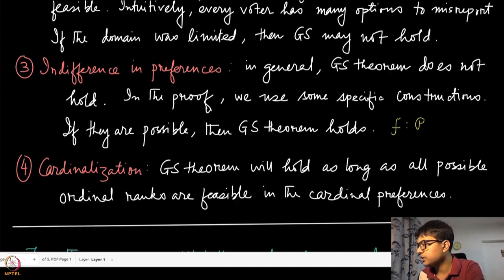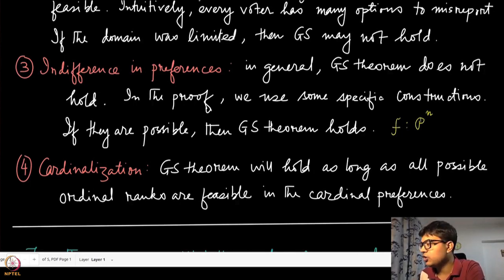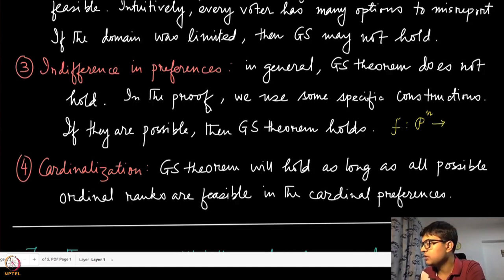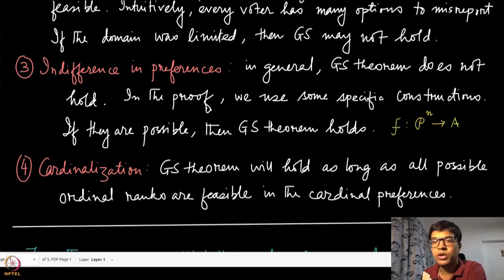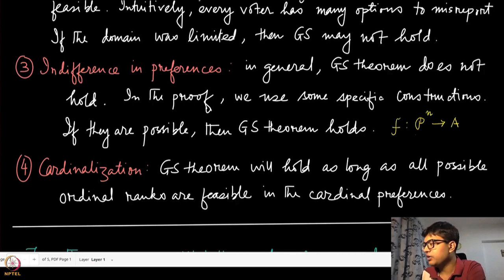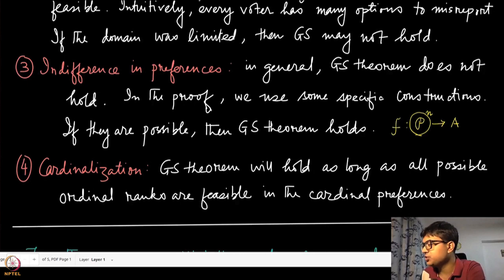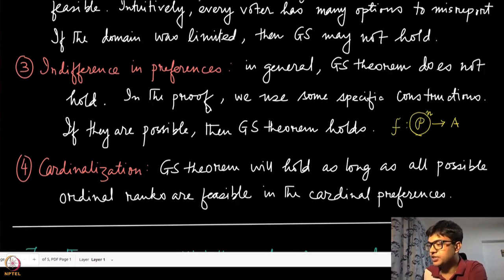Just remember that our social choice function is a mapping from script P to the power n — all players have preferences which live in script P — and we are picking one alternative. If you have this domain to be very much restricted, which we will discuss very soon, then GS theorem can be bypassed and we will see such examples.